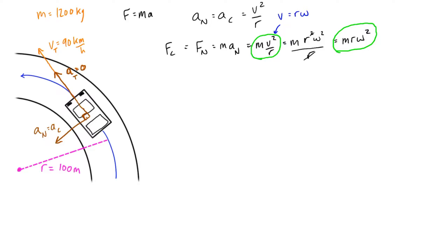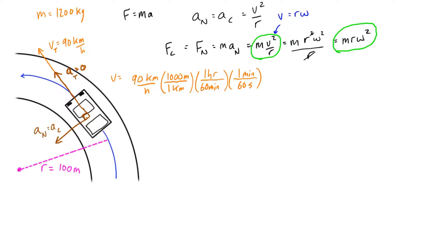First, let's convert 90 kilometers per hour into meters per second. We have v = 90 km/h. Multiply by 1000 meters per kilometer, then divide by 60 minutes per hour and 60 seconds per minute. The units cancel — kilometers with kilometers, hours with hours, minutes with minutes — leaving meters per second. 90 × 1000 ÷ 60 ÷ 60 gives us 25 meters per second, which is our tangential velocity v.